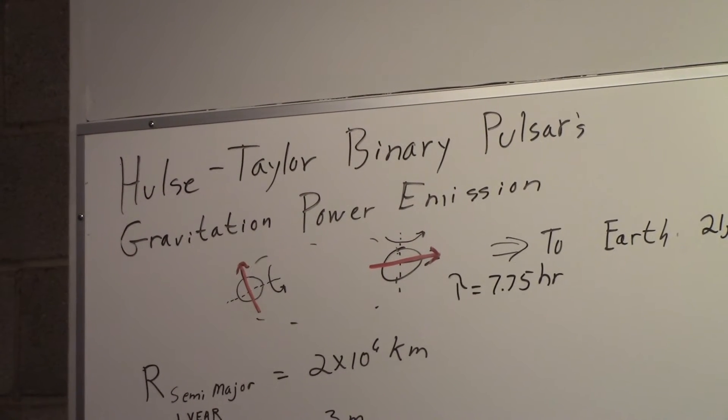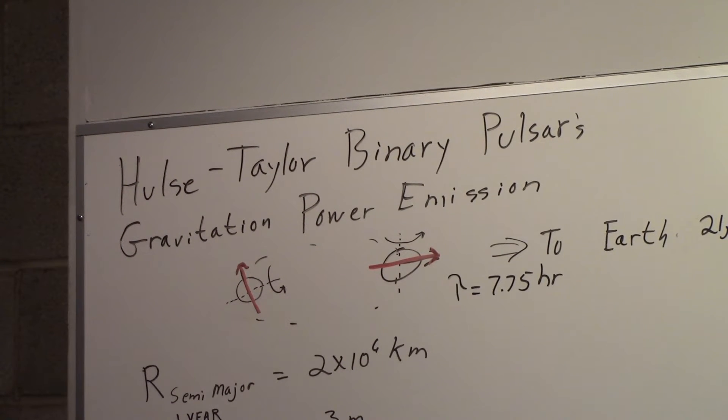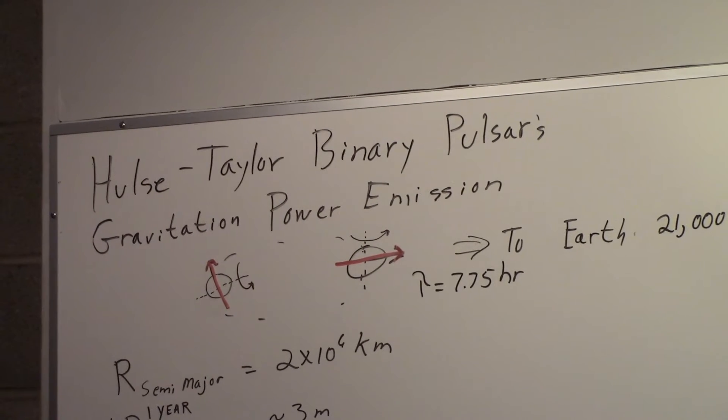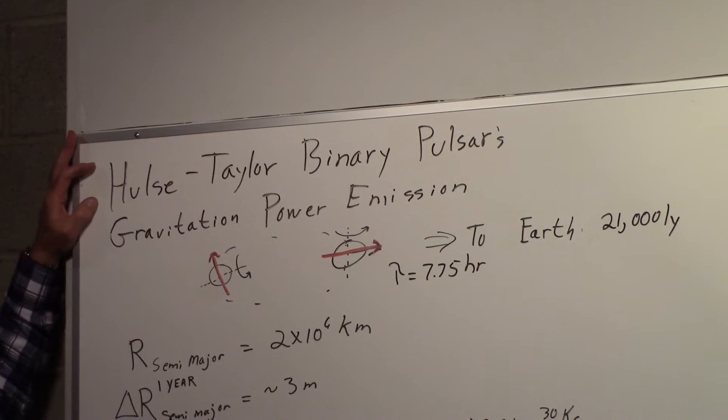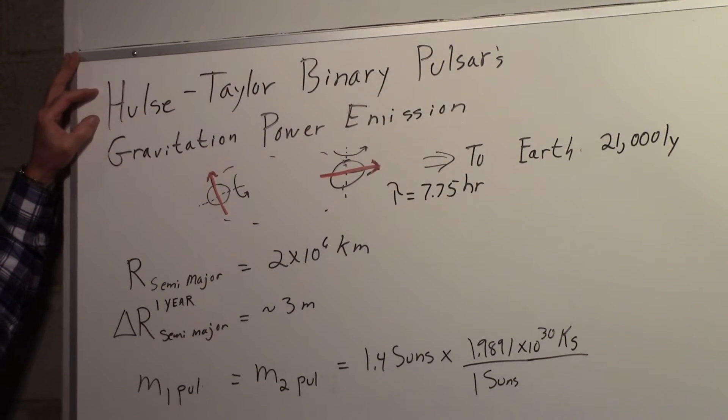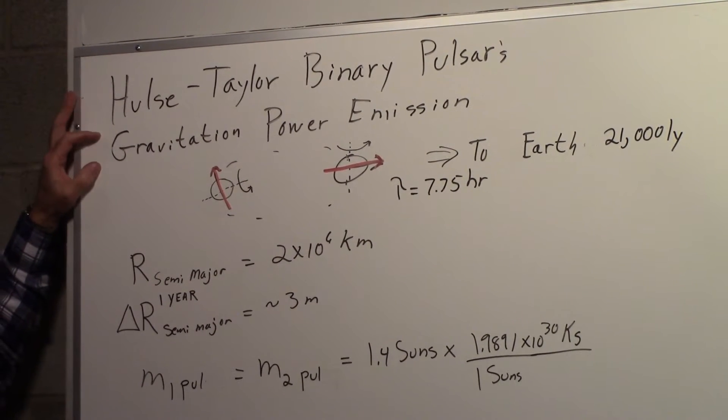We want to take a look at estimating the gravitational power emission from a pair of pulsars that are orbiting one another. So for the example, what we'll do is we'll take a look at the Hulse-Taylor binary pulsar's gravitational power emission.